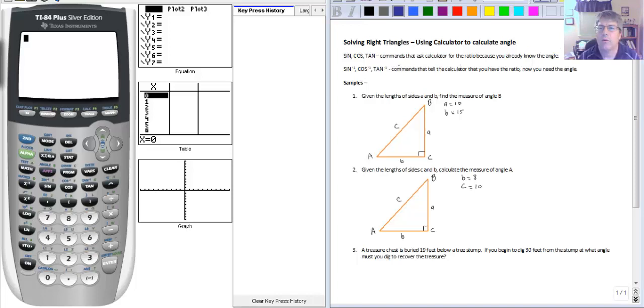So when we have sine, cosine, and tangent, we know the angle and we want to find the length of the side. Well now in these sample problems we're going to be given two sides and we're going to want to find the angle. So this is a little bit different.